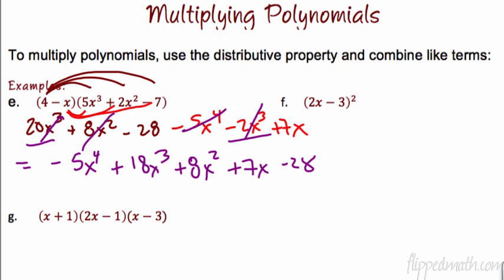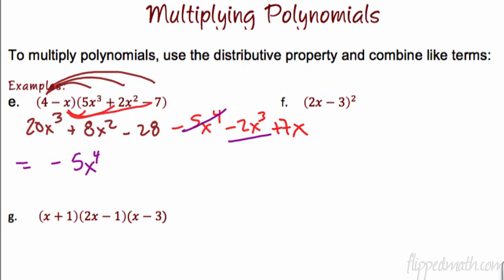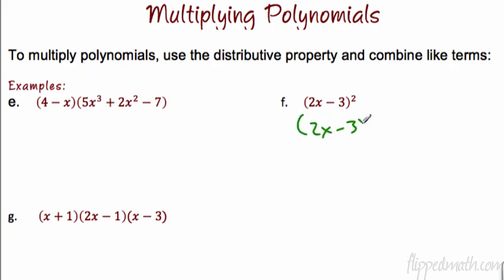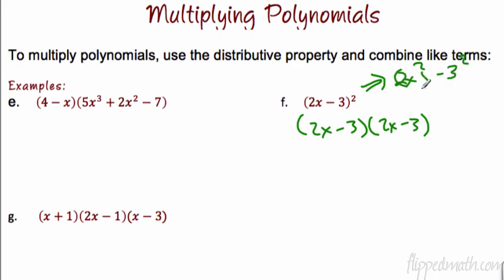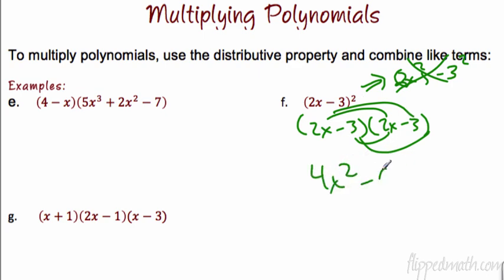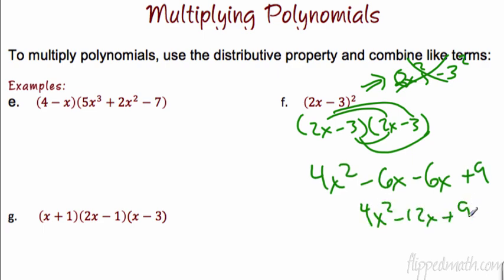Let's go on to example f. For f, I would rewrite this as two binomials. Remember, please don't just square each term separately — it's not 2x squared minus 3 squared; that's just not how it works. You have to double distribute each one of these terms. So we get 4x squared on the outside, minus 6x. On the inside, another minus 6x, and then a positive 9. So when I reduce that, we get 4x squared minus 12x plus 9.